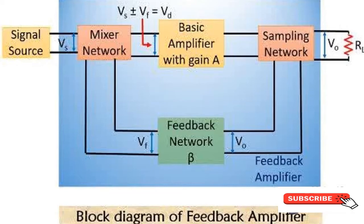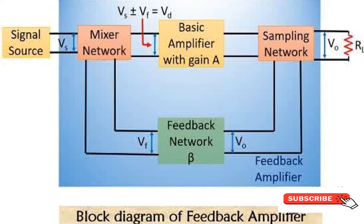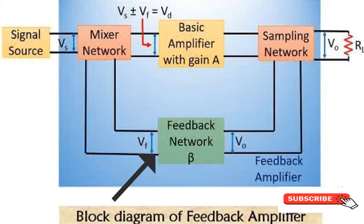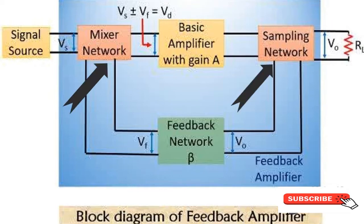You can see the basic amplifier block here — it is just a simple transistor without feedback which performs amplification. Another block is the signal source, from where the original signal comes. There is also a feedback network, also called an attenuator, which processes the feedback signal, and two most important blocks: a mixer and a sampler.